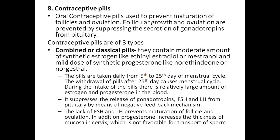The pills are taken from the 5th to 25th day of the menstrual cycle. Withdrawal after the 25th day causes menstrual bleeding. During intake of the pills, the relatively large amounts of estrogen and progestogen in the blood suppress release of gonadotropins FSH and LH from the pituitary by a negative feedback mechanism. The lack of FSH and LH prevents maturation of follicles and ovulation. In addition, progestogen increases the thickness of mucus in the cervix, which is not favorable for sperm transport.